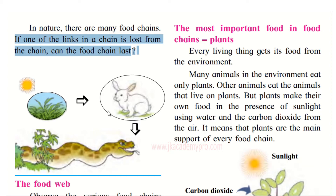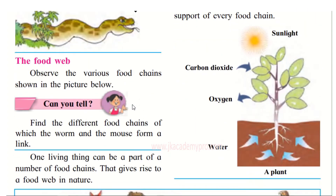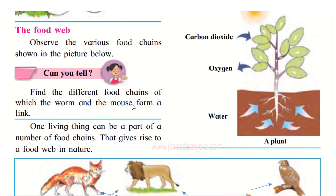Here is another food chain. We have the sun, the plants, the rabbit eating the plants, and the snake eating the rabbit. Now let's learn about the food web. Observe the various food chains shown in the picture.